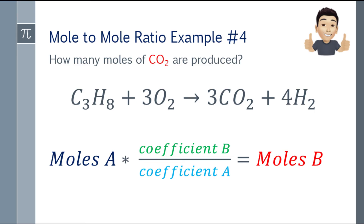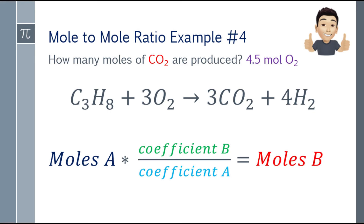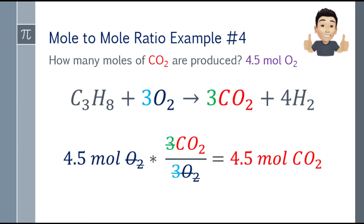For part B — how many moles of carbon dioxide are produced — we use the formula again. We have 4.5 moles of oxygen gas from the previous answer. We could also use 1.5 moles of propane, but let's use the 4.5 moles of oxygen.